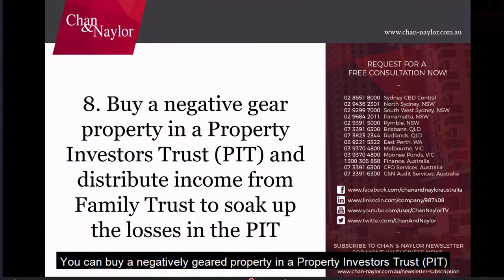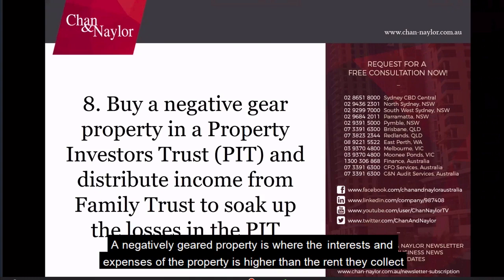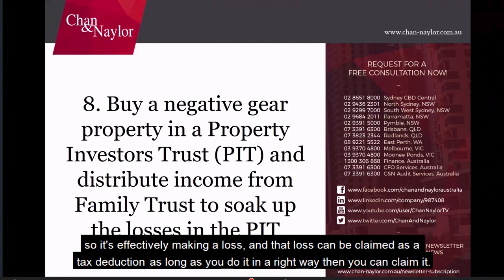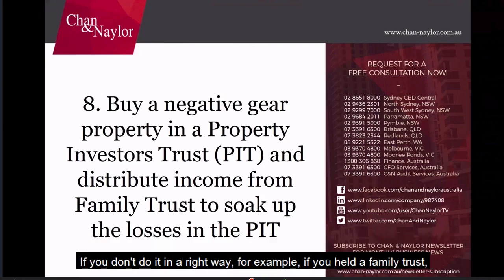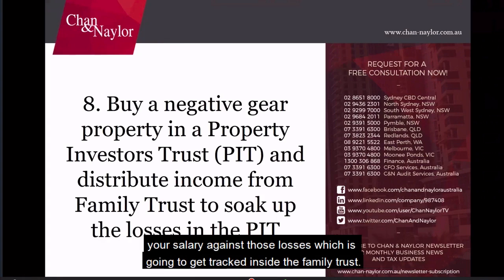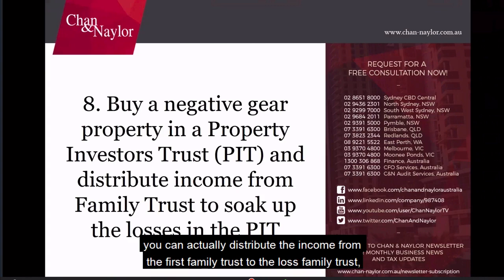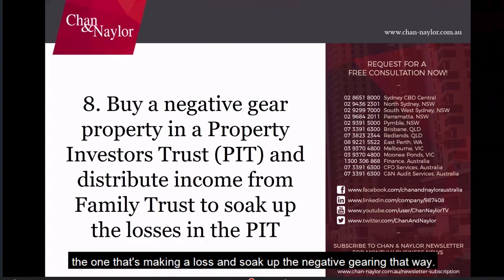You can buy a negatively-geared property in a property investor trust and distribute income from your family trust to soak up the losses in that trust. A negatively-geared property is where the interest and expenses exceed the rent collected, effectively making a loss, and that loss can be claimed as a tax deduction. If you held a family trust with the property losses inside, but you're a salaried worker, you won't be able to offset your salary against those losses — they get trapped. However, if your business is also in a family trust, you can distribute income from the first family trust to the loss-making trust to soak up the negative gearing.